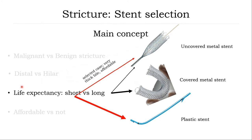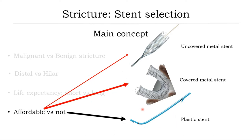Regarding life expectancy: for short life expectancy, recommend using plastic stent — one or two stents. Comparing metal stent and plastic stent, the diameter of the metal stent is much bigger than plastic stent. If available and affordable, recommend using metal stent compared with plastic stent.